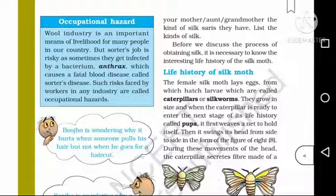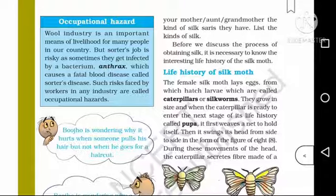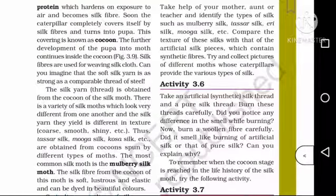Then it swings its head from side to side in the form of the figure of eight. During these movements of the head, the caterpillar secretes a fiber made of a protein which hardens on exposure to air and becomes silk fiber.